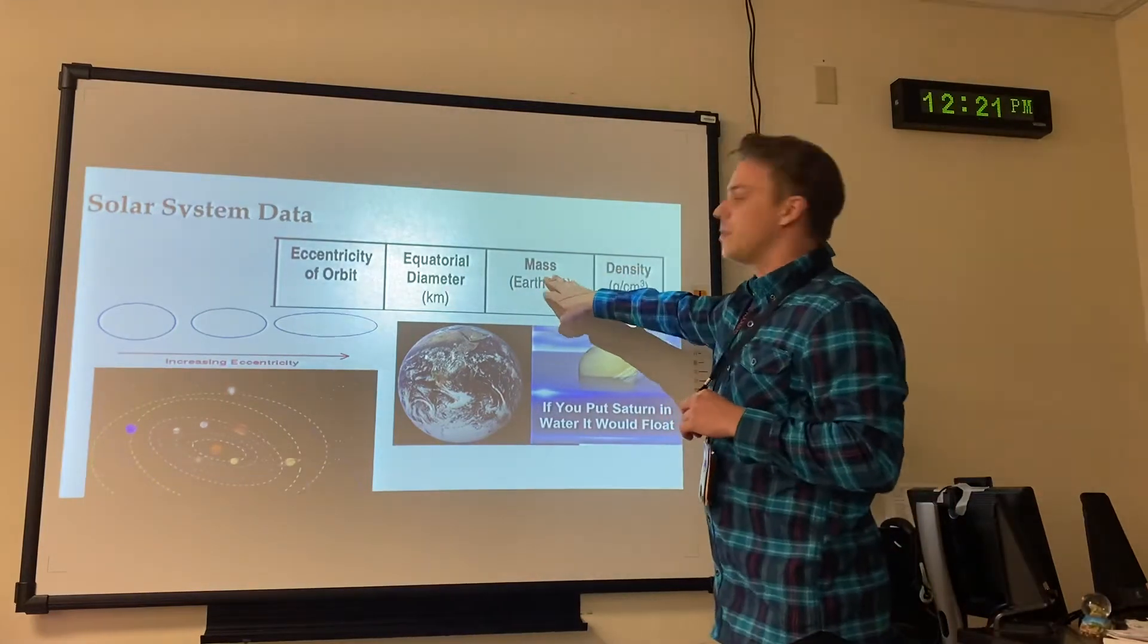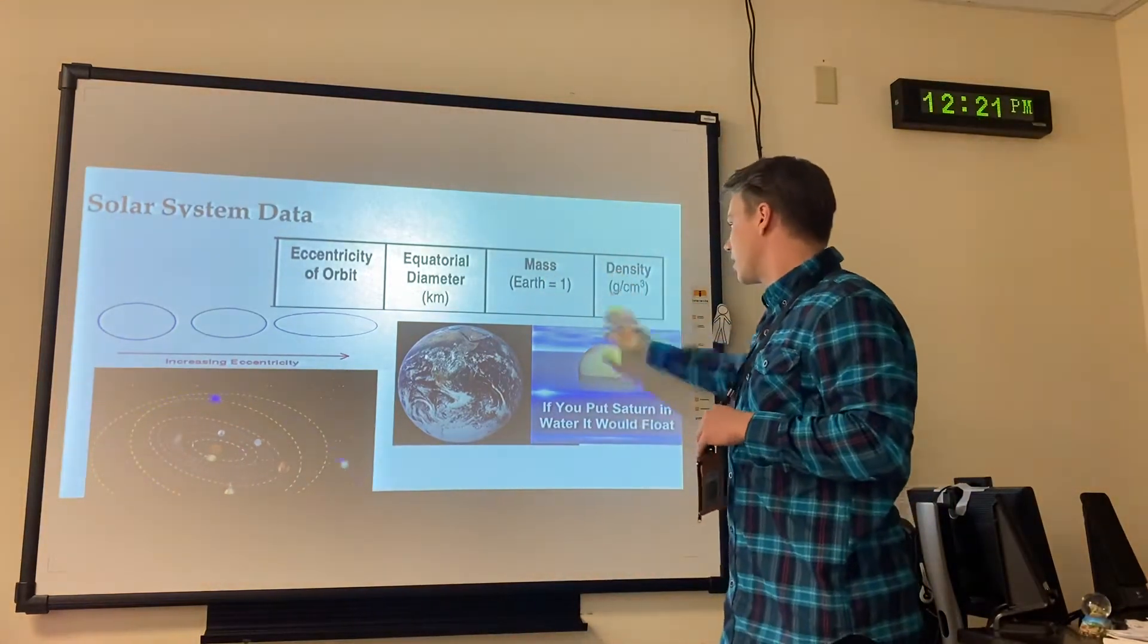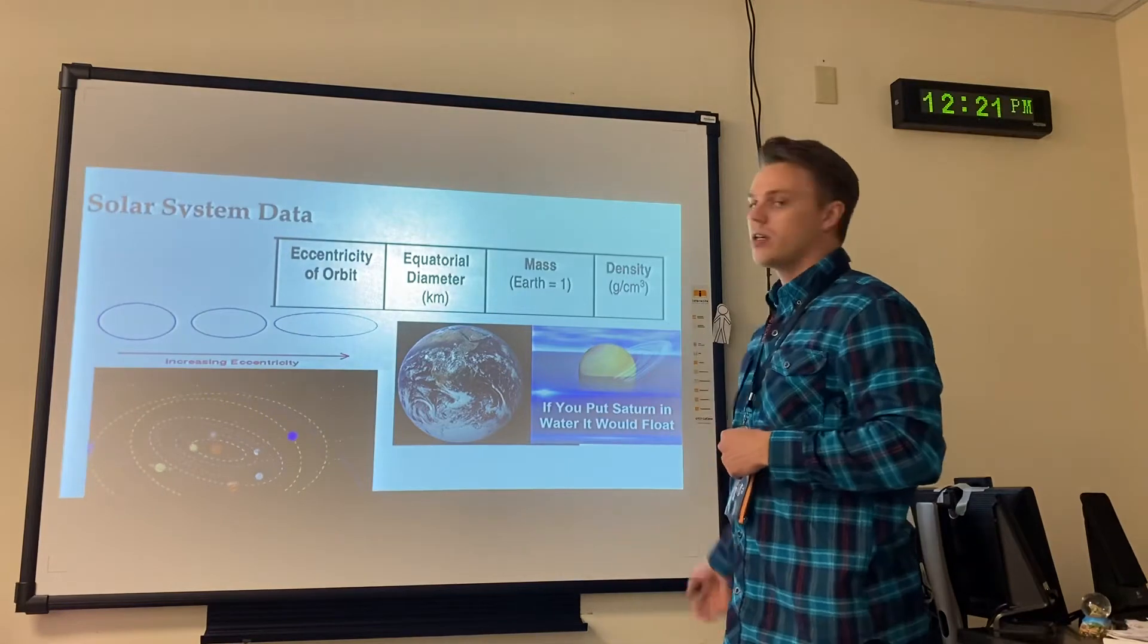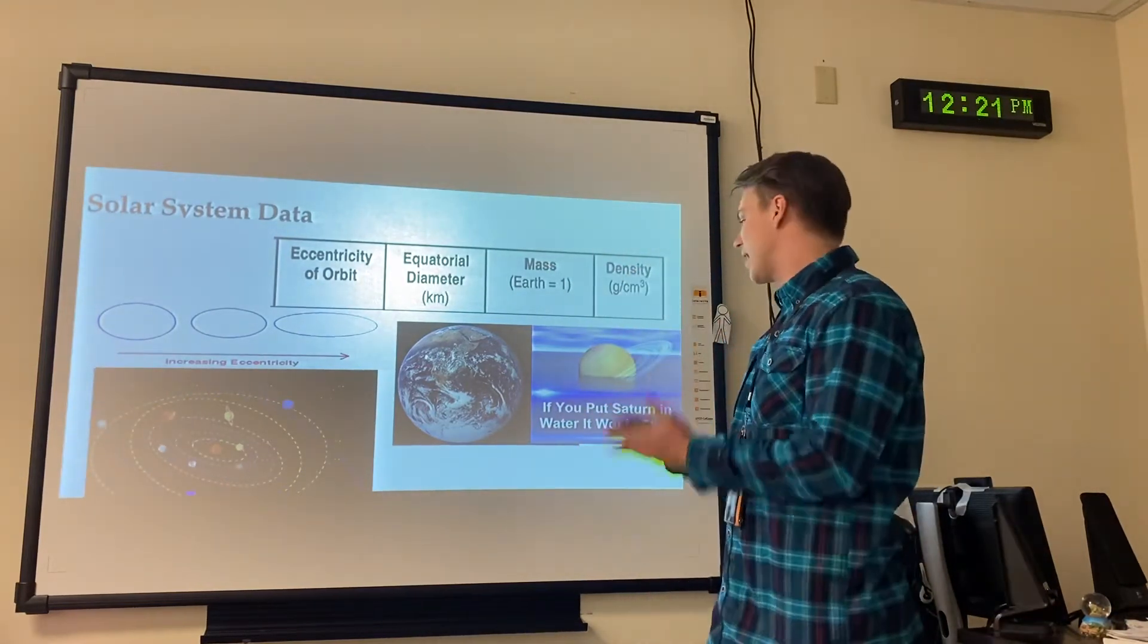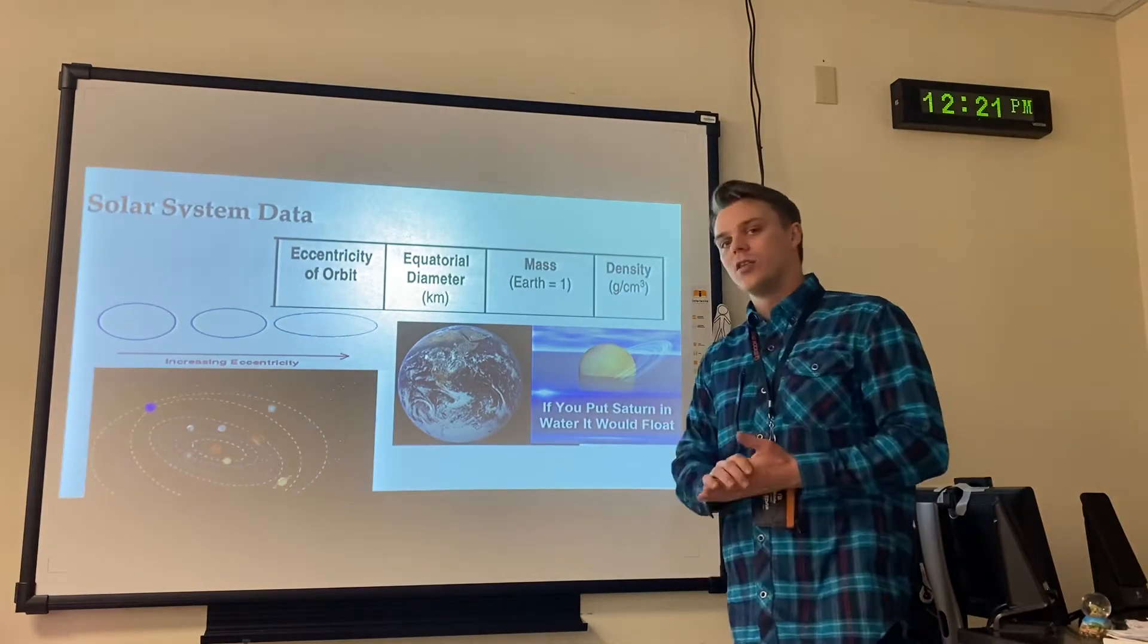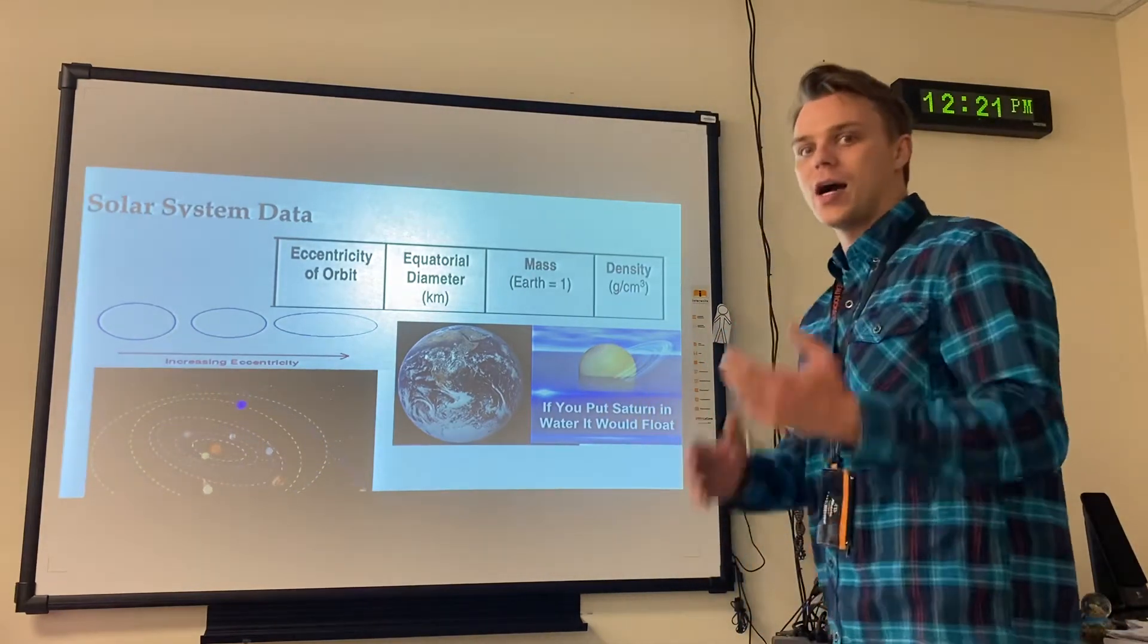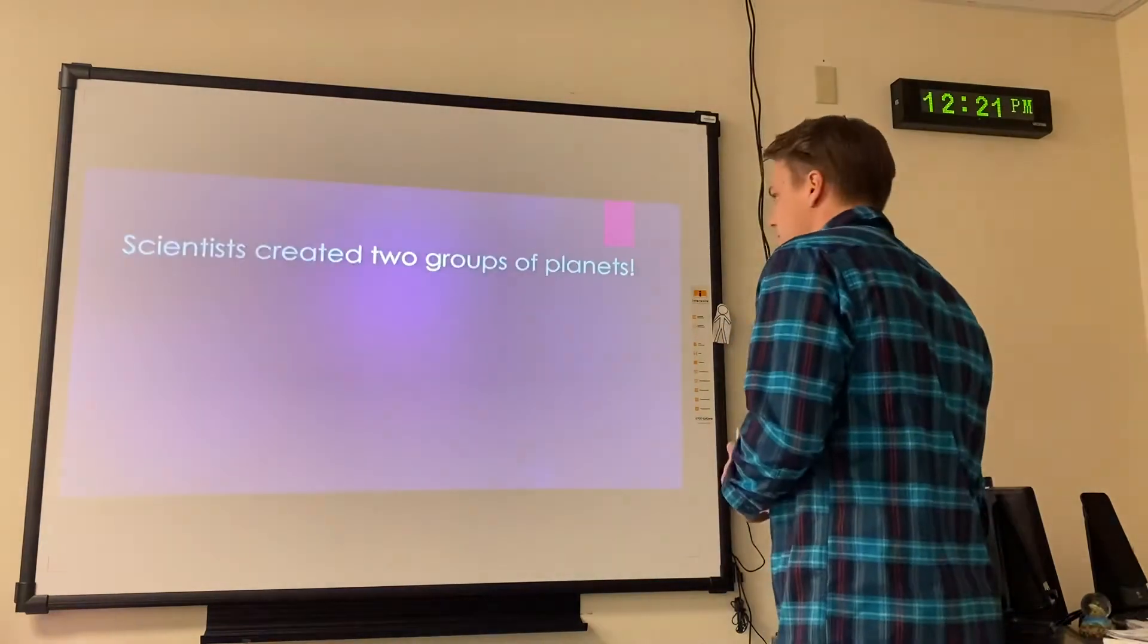And then mass is going to be how heavy it is, and density is going to be whether it sinks or floats in water. Now, planets, you know, they're too big to be put in water, but the idea is that if it's made of gas, it's a low-density planet. If it's made of rocks, it's a high-density planet. Okay,